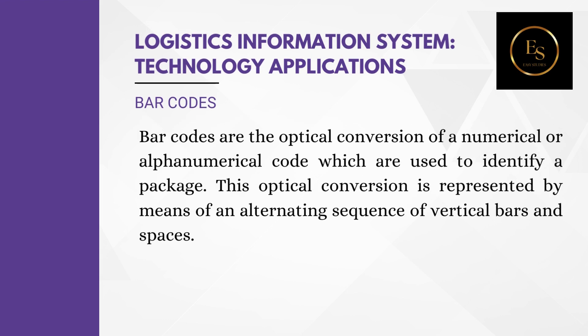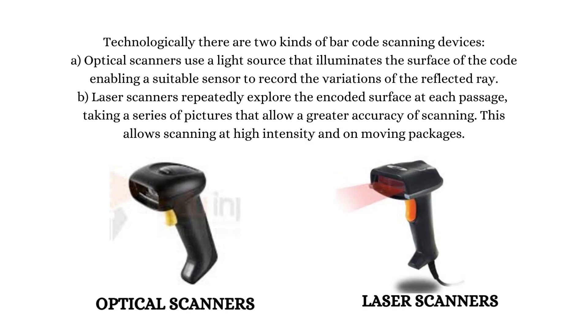Technology Applications. Number 1: Barcodes. It is the optical conversion of a numerical or alphanumerical code which is used to identify a package. This optical conversion is represented by means of an alternating sequence of vertical bars and spaces. Optical scanners use a light source that illuminates the surface of the code, enabling a suitable sensor to record the variations of the reflected ray. Laser scanners repeatedly explore the encoded surface at each passage, taking a series of pictures that allow greater accuracy of scanning. This allows scanning at high intensity and on moving packages.